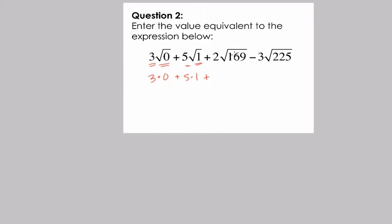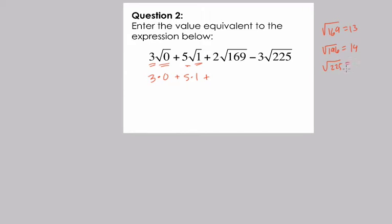Plus 2 times the square root of 169. The square root of 169 is 13 — you want to familiarize yourself with these. The square root of 196 is 14: if you reverse the digits of 169 to get 196, you get 14. And the square root of 225 is 15 — that should be automatic. So here we have 2 times 13, minus 3 times 15.